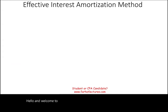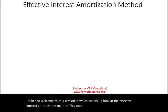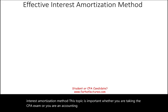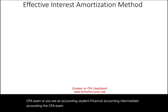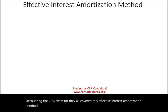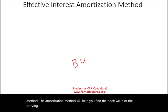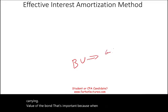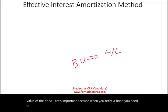Hello and welcome to this session in which we look at the effective interest amortization method. This topic is important whether you are taking the CPA exam or you are an accounting student — financial accounting, intermediate accounting, the CPA exam FAR — they all cover this method. The amortization method will help you find the book value or carrying value of the bond, which is important because when you retire a bond, you need to determine whether there is a gain or a loss.